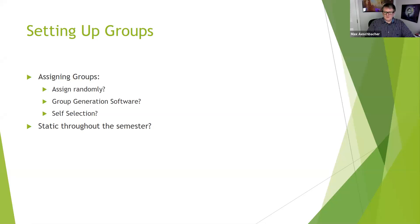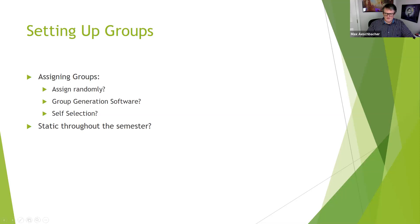I also advocate static groups throughout the semester. Sometimes students complain about this, but usually that means there's a problem in their group that you're going to have to deal with anyway. I tend to lean toward random group assignments because it's easy and Canvas — or whatever learning management system you use — will do it for you. I find that the variation in skills, leadership qualities, and all the things that make groups good tend to get distributed okay with random assignment.